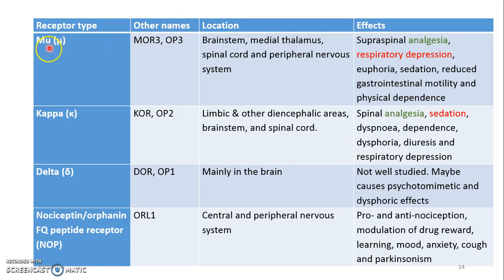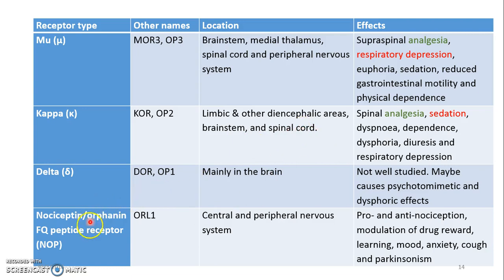The mu receptor can be found in the brainstem, medial thalamus, spinal cord, and also the peripheral nervous system. The kappa receptor can be found in the limbic and other diencephalic areas, as well as in the brainstem and spinal cord. The nociceptin orphanin FQ peptide receptor can be found in the central and peripheral nervous system.